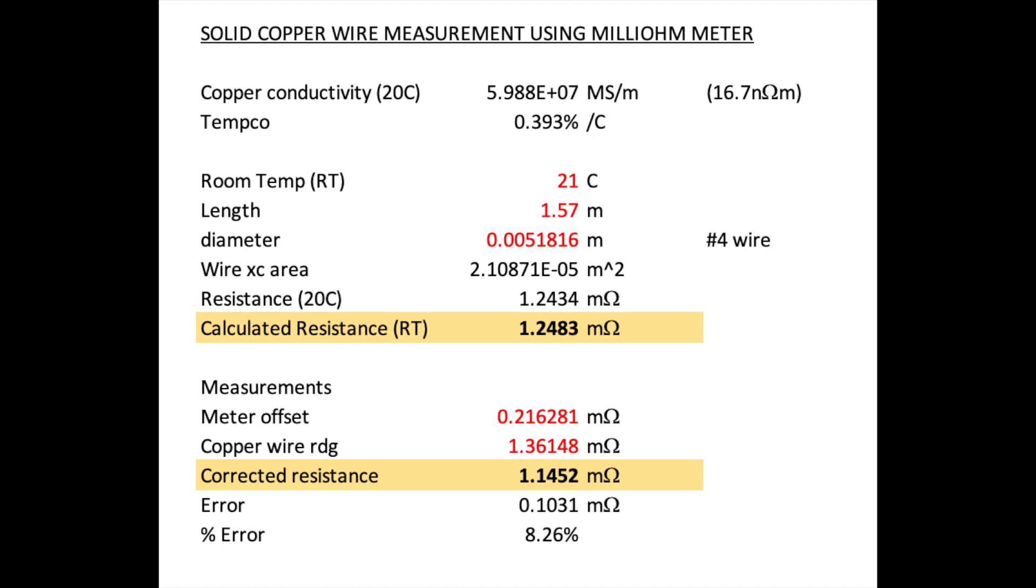So the meter offset, which we calculated earlier, was 0.21628 milliohms. And the copper wire reading was 1.36148 milliohms. So the corrected resistance turns out to be 1.1452, that is the difference between these two. And the error is 0.1031 milliohms, so that works out to 8.26%.